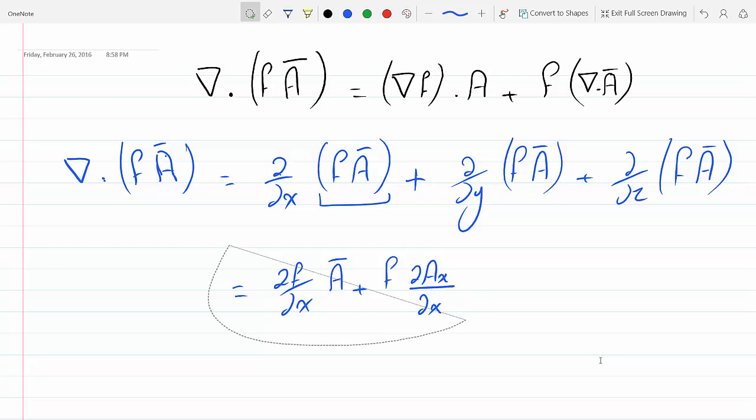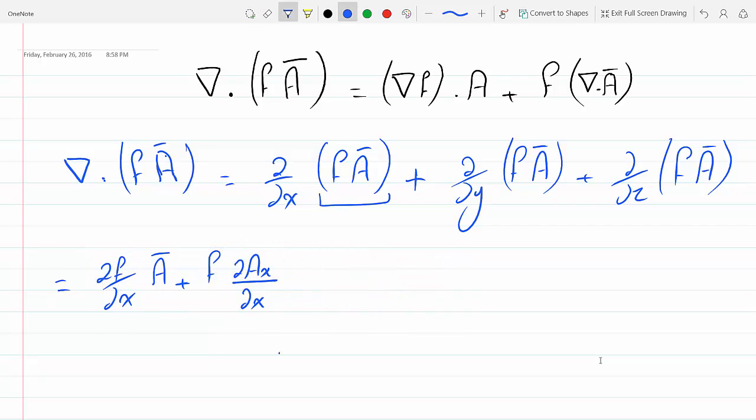Let me just move this to the left so I can have more room here. Okay, so plus df over dy times A plus f dAy because you differentiate the corresponding components with respect to y.